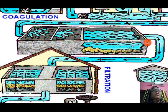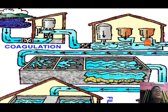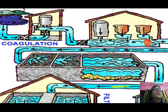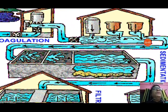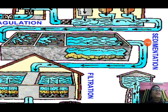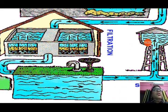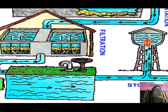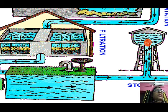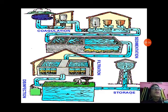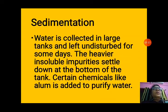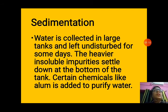Let us see one by one all these processes. You can see the picture here — a coagulation tank and different types of tanks where sedimentation is done, after that filtration, then chlorination, and then the water is sent to different houses in towns and cities.